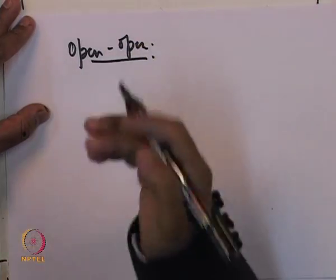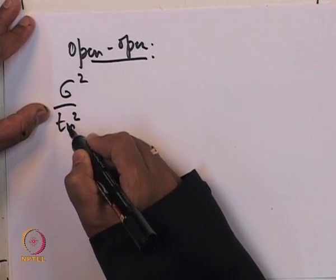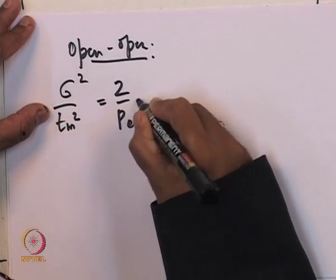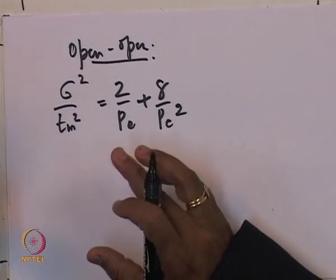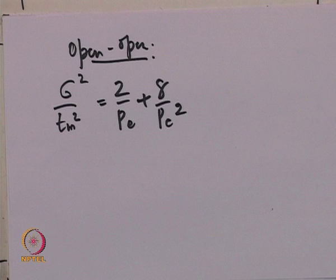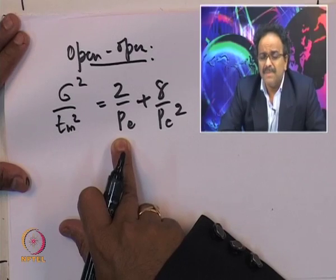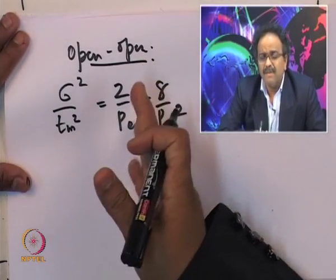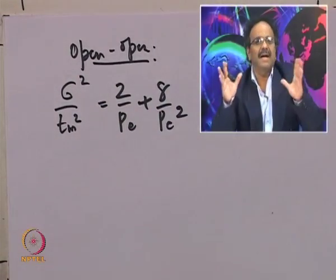For an open-open vessel the relationship is σ²/t_m² = 2/Pe + 8/Pe². For an open-open system, t_m is not equal to τ. Once you get σ from the E-curve you can calculate Pe. If you are unsure about the vessel type, try all boundary conditions, get all possible Pe values, and calculate conversion for each to get at least some idea.